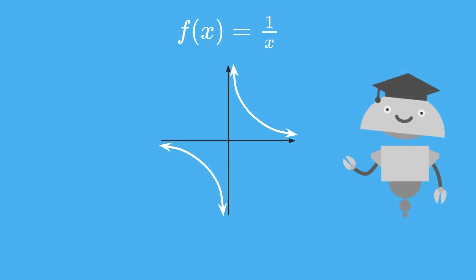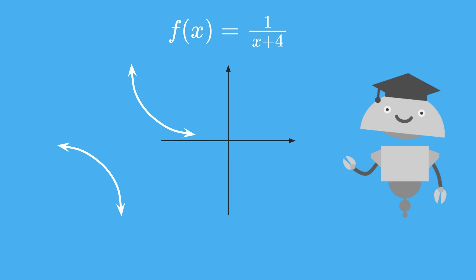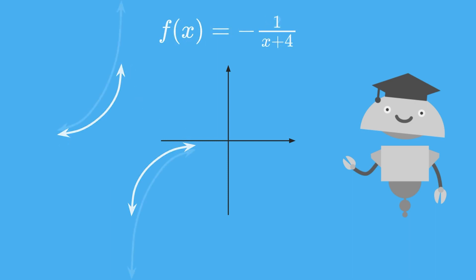In this lesson, we talked about dilations of the graph one over x. We've now talked about translations, reflections, and dilations. If you put these transformations together in different ways, you can get all sorts of interesting combinations. In our next video, we'll explore more graphs of functions like these. See you then!